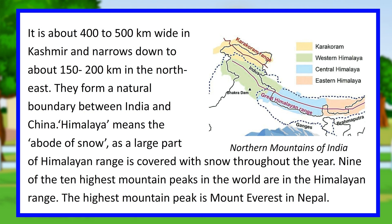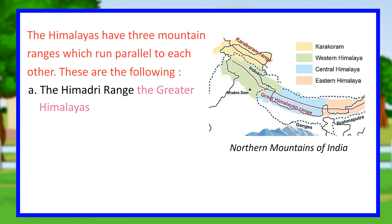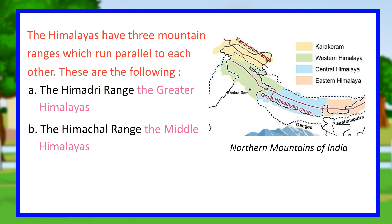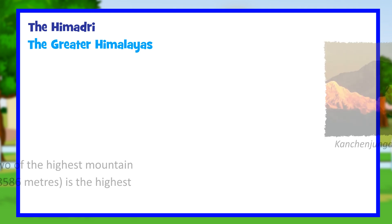Himalaya means the abode of snow, as a large part of the Himalayan range is covered with snow throughout the year. Nine of the ten highest mountain peaks in the world are in the Himalayan range, and the highest peak is Mount Everest in Nepal. The Himalayas have three mountain ranges which run parallel to each other: the Himadri Range (Greater Himalayas), the Himachal Range (Middle Himalayas), and the Shivalik Range (Outer Himalayas).